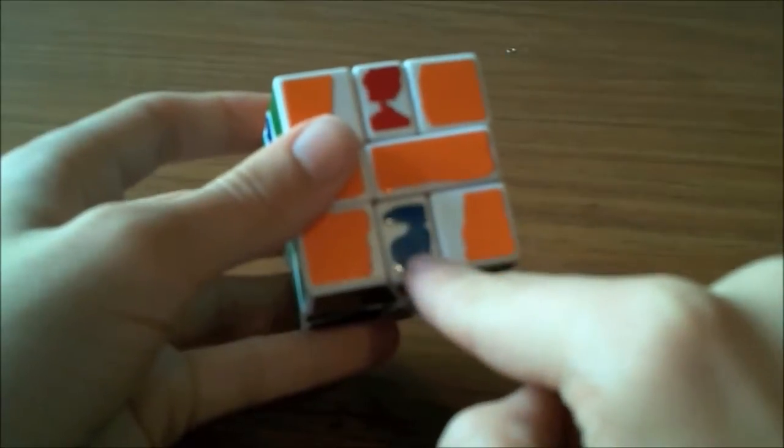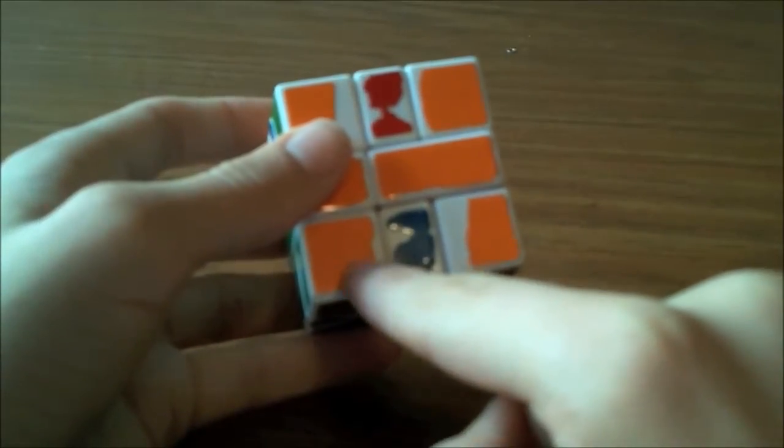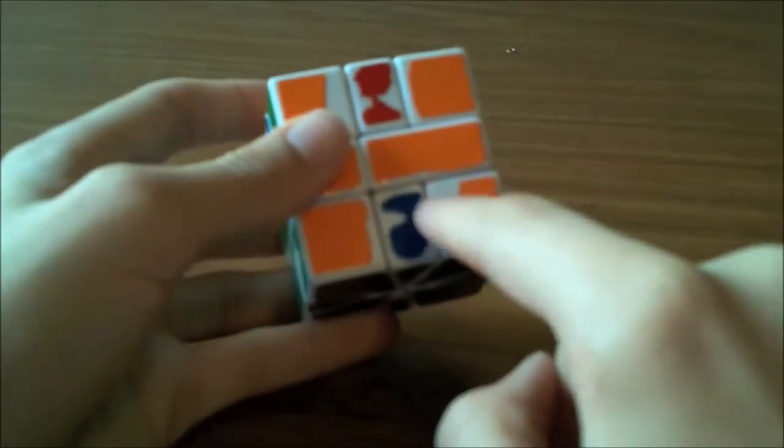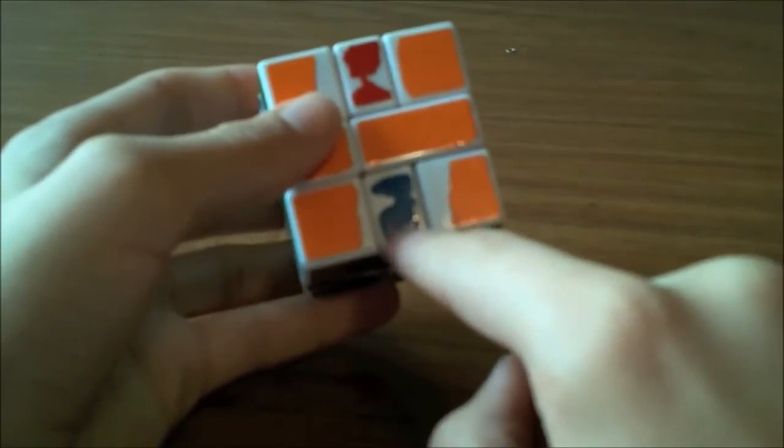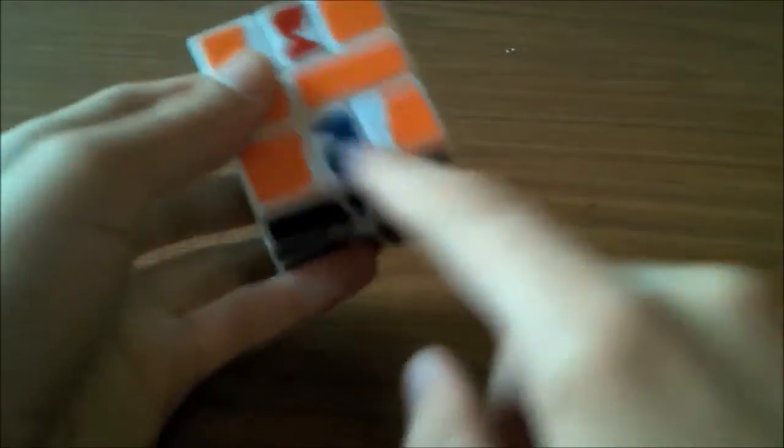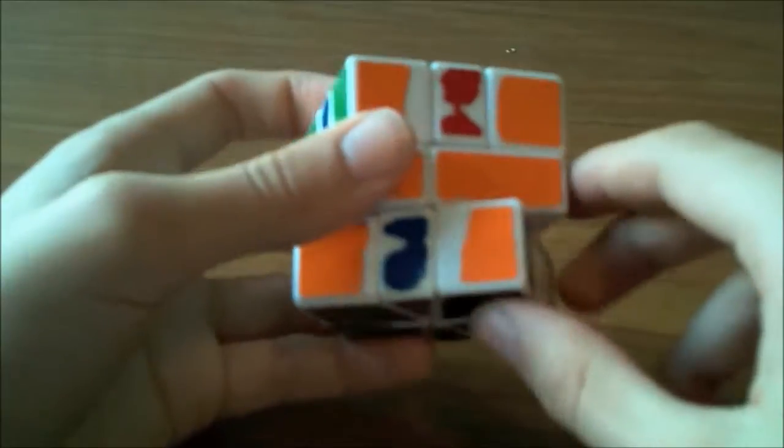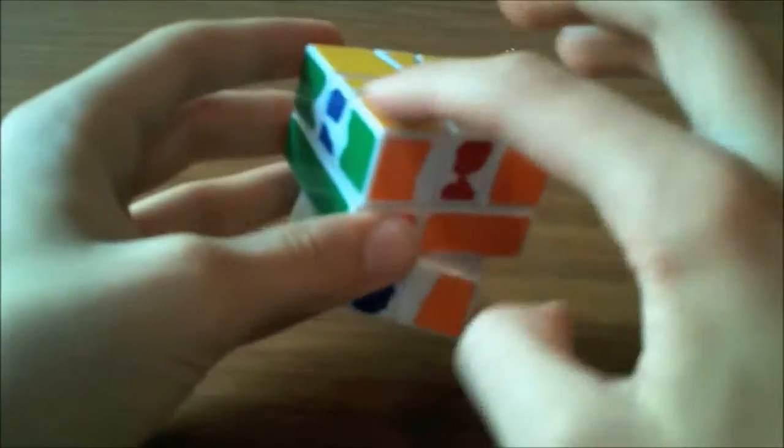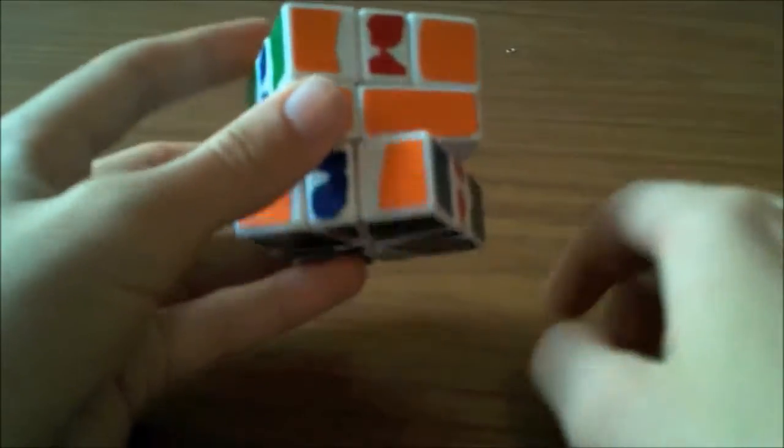If this edge color doesn't match this corner color, like not match, but the opposite of orange is red, right? So this is not that, so you know it's a clockwise U-perm, and so I know that I have to offset it for this. So if it's not the opposite, then you offset it.